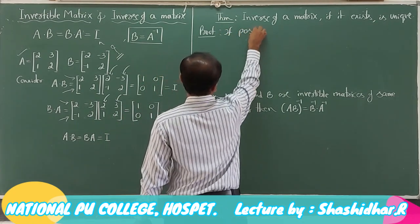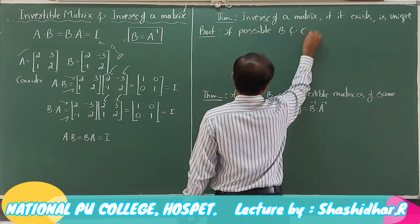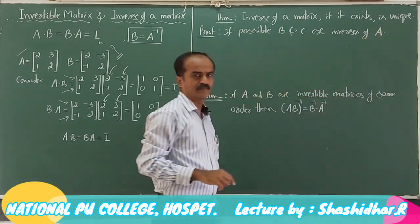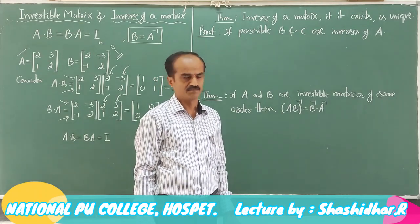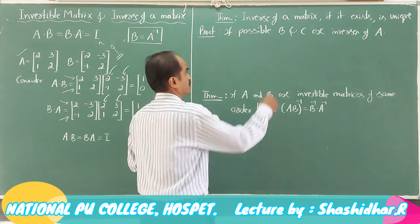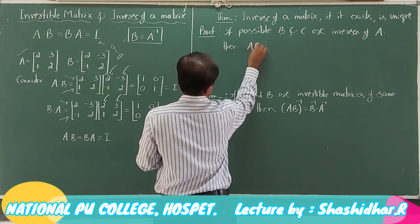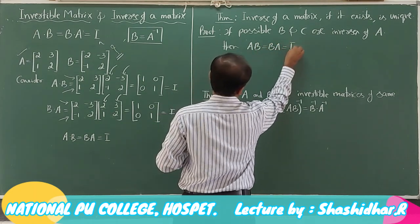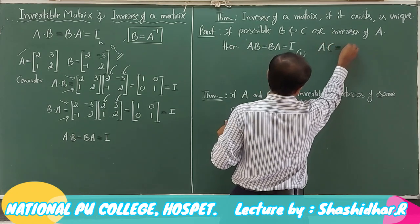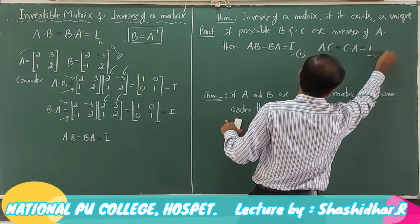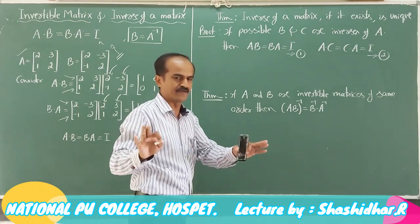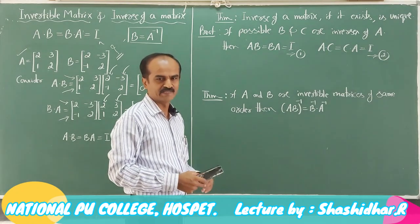To prove this: if possible, let B and C be inverses of A. According to the definition, if B is inverse of A then AB = BA = I (equation 1), and since C is also inverse of the same matrix, AC = CA = I (equation 2). If we can show that B and C are one and the same, then the proof is completed — they cannot be distinct.